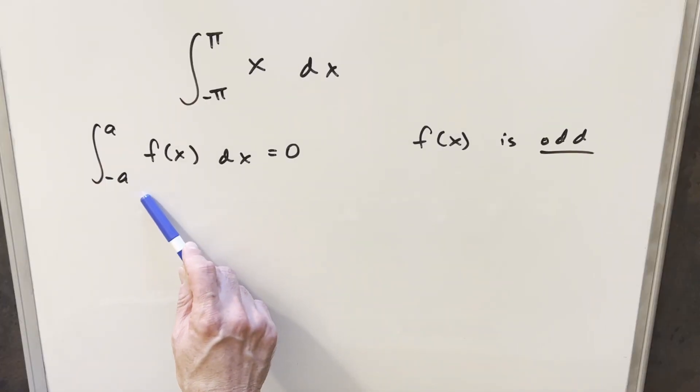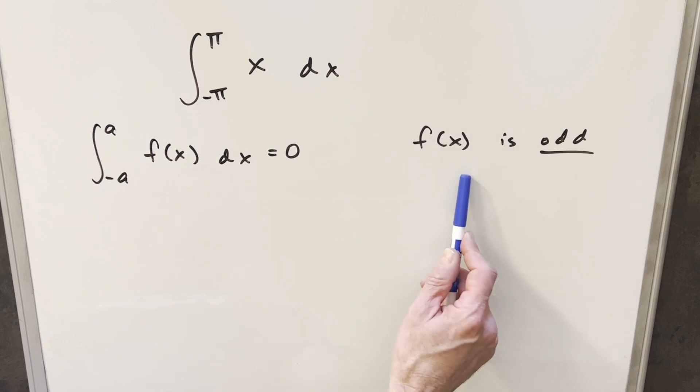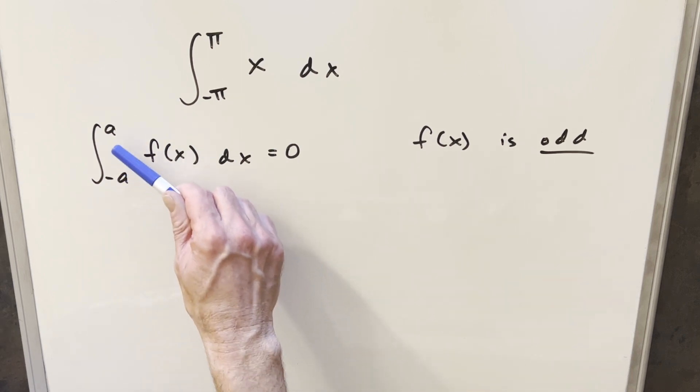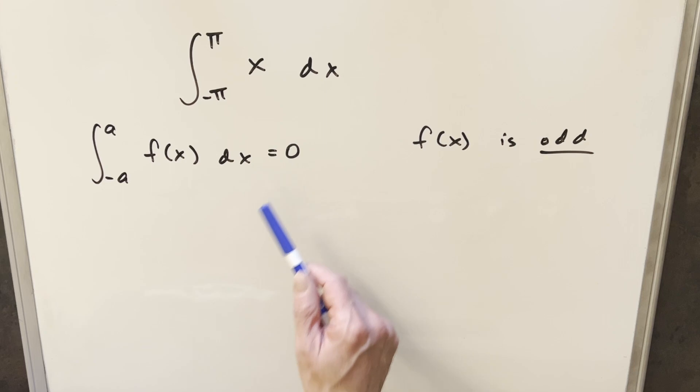Okay, so we have on the board here this principle of odd functions that says that if we have an odd function f of x, and we have bounds symmetric around zero, like minus a to a, then our integral is just zero.